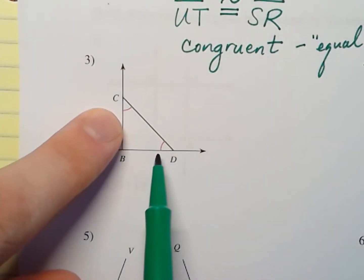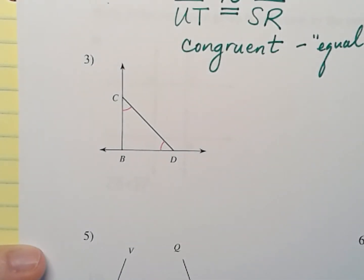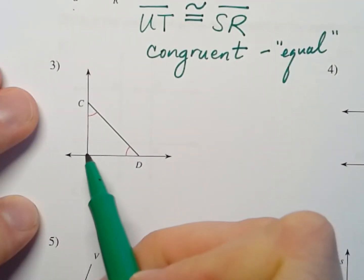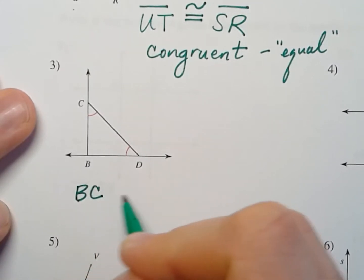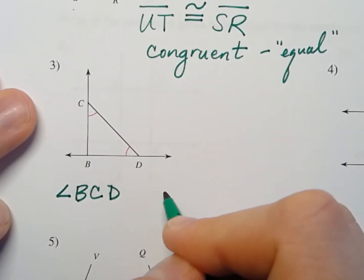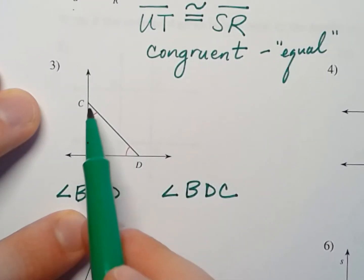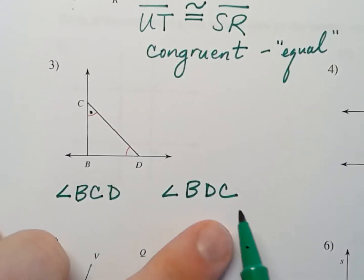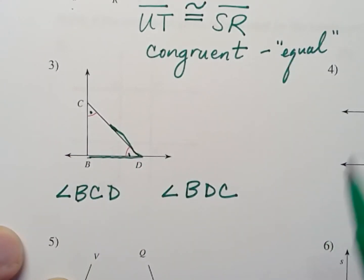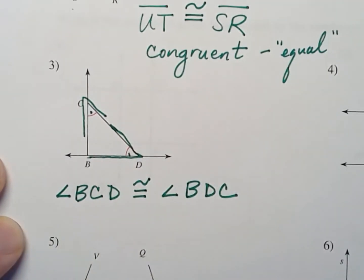Here, those two little marks on the angles being both red means that the angles are congruent — they have the same measure and the same characteristics. So we could say that angle BCD and angle BDC are congruent. The first one is angle BCD — that angle right here. And the second one, BDC, is that one right there. Those little marks tell me they are congruent.